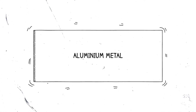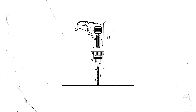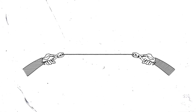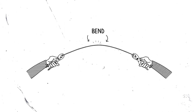Metals are all very useful materials, but you need to choose the right metal for the use you want. Steel used to make drill bits is harder than most materials — the atoms are very strongly bonded together. The drill bit will cut through aluminium, which has atoms held together less strongly so they can slip past each other. Aluminium can be bent and shaped but still retain some strength. The steel for drill bits, however, is brittle and just breaks when it's bent.